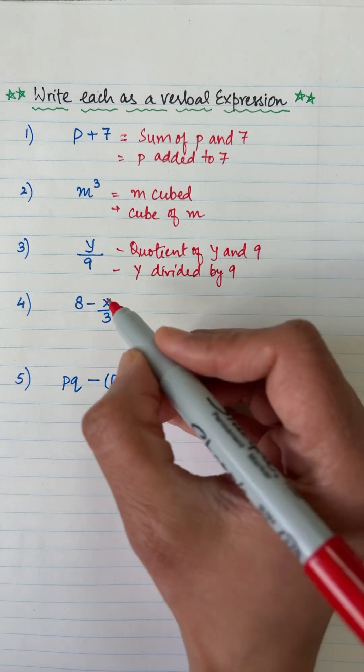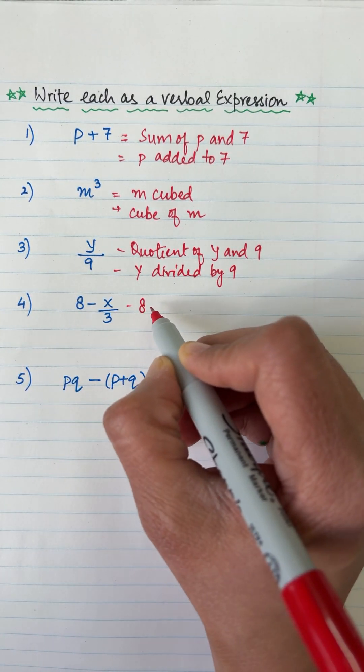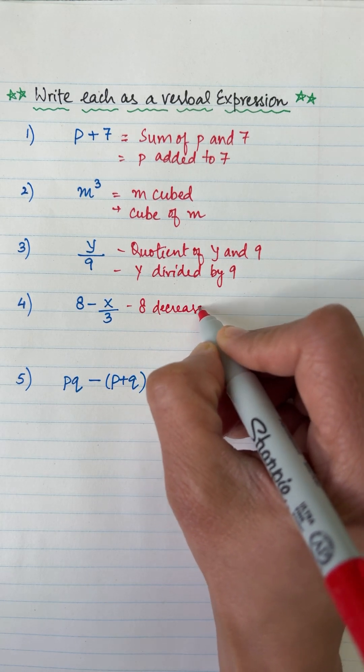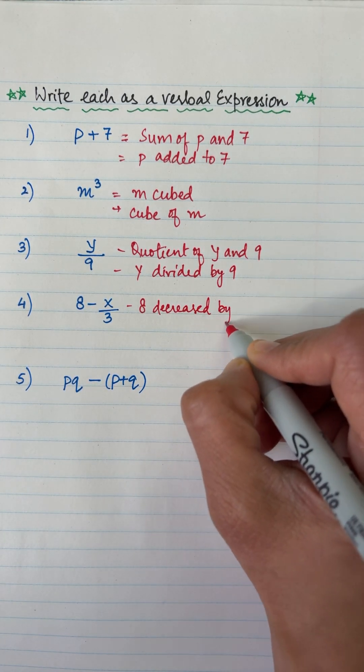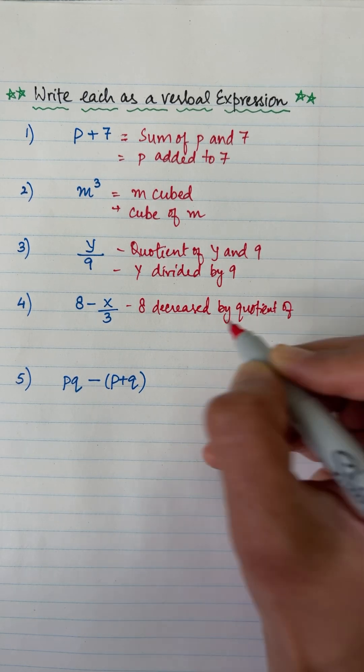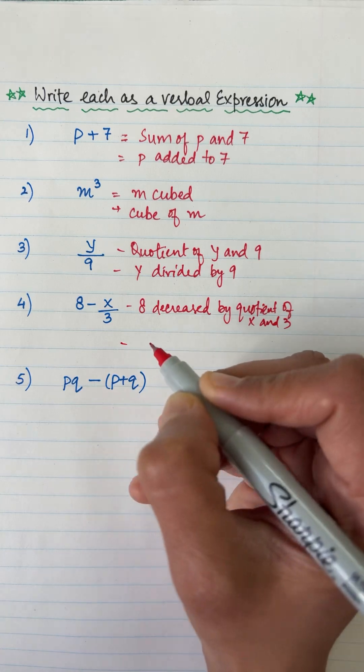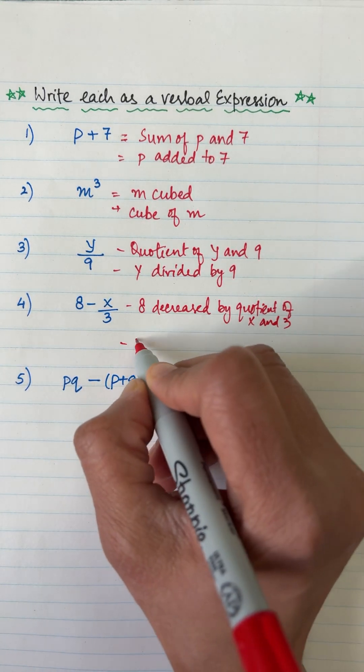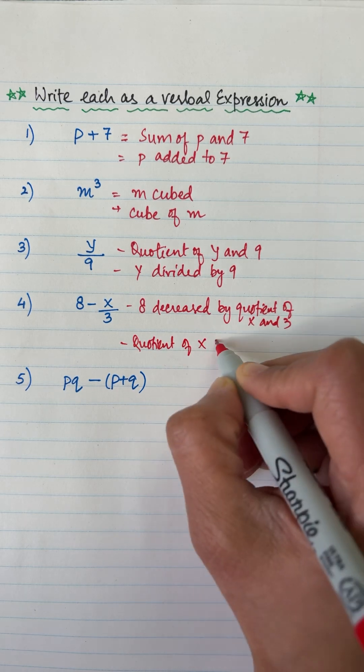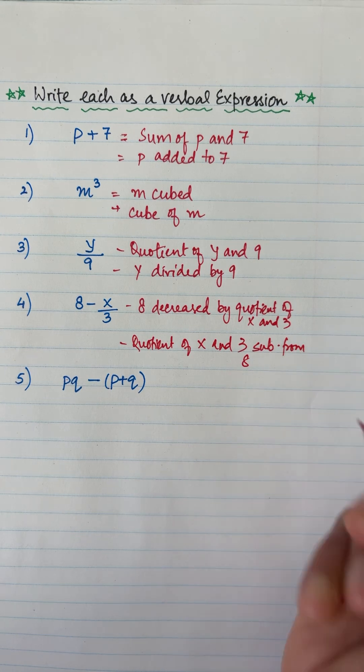8 minus x over 3, I can write it as 8 decreased. Minus means it has been subtracting, it has been decreased. So 8 decreased by the quotient of x and 3. I can write it as this way also: quotient of x and 3 subtracted from 8.